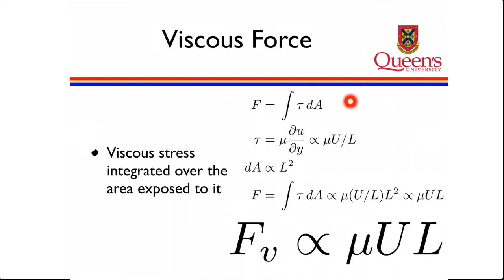And that viscous force, we'll get it by integrating the shear stress over the area, just the same way that we got a pressure force by integrating the pressure over an area. We'll integrate the shear stress over an area. The shear is proportional to viscosity and the velocity gradient. That'll be viscosity times the total difference in velocity divided by the length scale, at least from a proportionality standpoint. And the area is proportional to L squared.